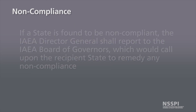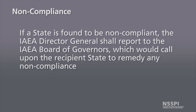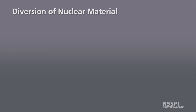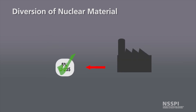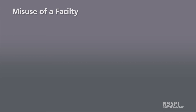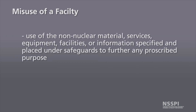If a state is found in noncompliance, the IAEA Director General shall report the noncompliance to the IAEA Board of Governors, which would then call upon the state to remedy it. There are two general types of noncompliance: first, diversion of nuclear material — including undeclared removal of declared material, or use of a safeguarded facility for the introduction, production, or processing of undeclared nuclear materials. The second is misuse of a facility: use of non-nuclear material, services, equipment, facilities, or information placed under safeguards to further any proscribed purpose or proliferation activity.